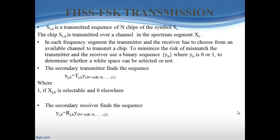In each frequency segment, the transmitter and the receiver must choose from an available channel to transmit the chip. To minimize the risk of mismatch between the transmitter and the receiver, they use a binary sequence Y_n, where Y_n is either 0 or 1, to determine whether a white space can be selected or not. The secondary transmitter finds the sequence denoted by equation 1, and if X_{j,k} equals 1 it is considered selectable. The secondary receiver finds the sequence denoted by equation 2, and similarly if Y_{j,k} equals 1 it is selectable, and if 0 it is not selectable.